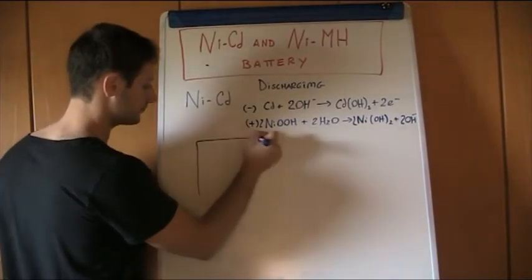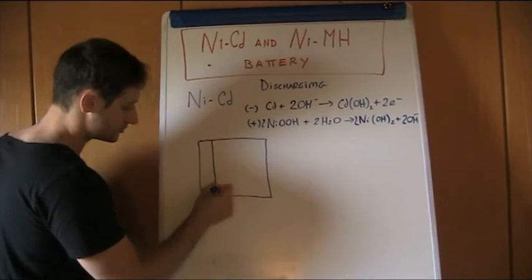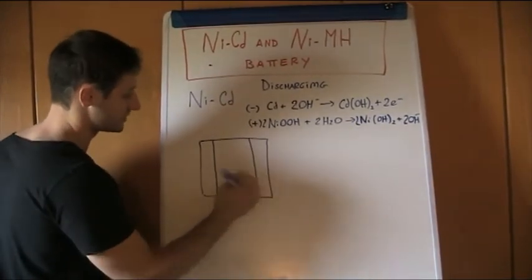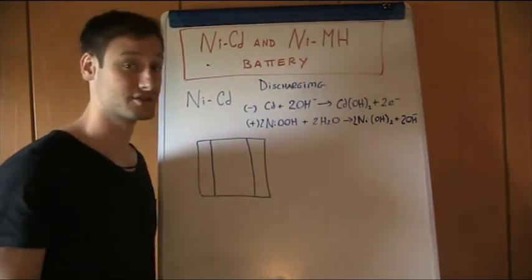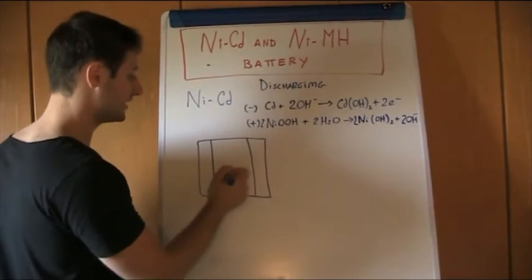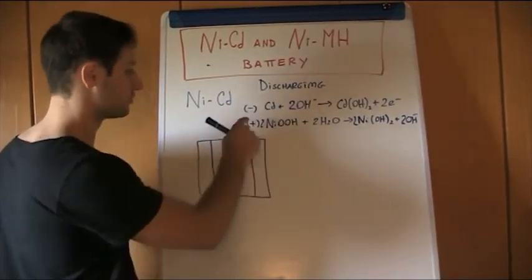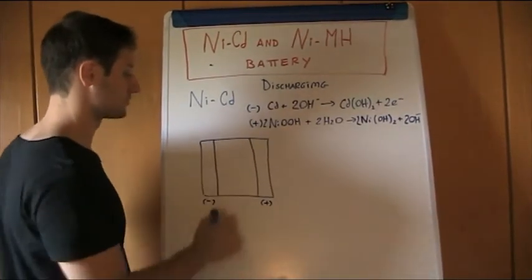We have our cell, the electrolyte, with the copper or aluminum current collector, and on this current collector we have our electrode, one that is composed of cadmium, and the other one that is composed of nickel oxide hydroxide.